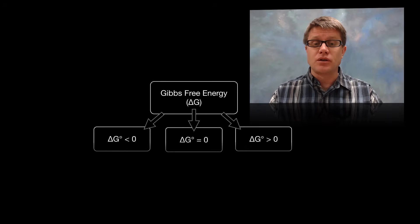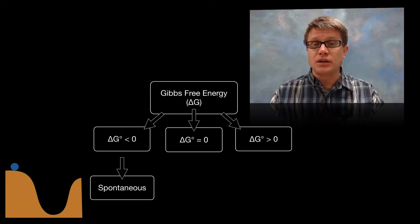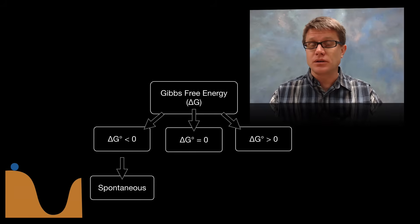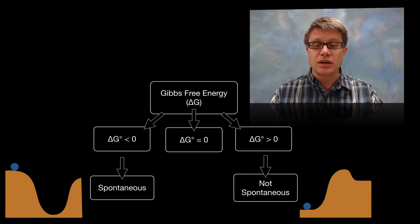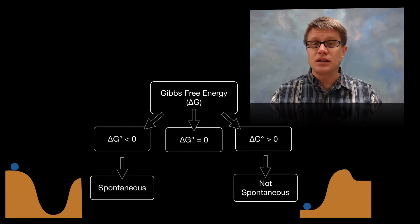Gibbs free energy is a really good indicator of whether we have a spontaneous or non-spontaneous reaction. If delta G is ever negative or less than zero, we know we have a spontaneous reaction — energy can be released. If delta G is greater than zero, we have an uphill reaction that won't occur spontaneously; we're going to have to put energy in for it to work.